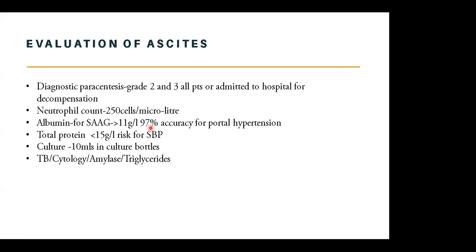We also send the fluid for total protein, keeping in mind that a total protein of less than 15 grams per liter is a risk factor for developing SBP. We have to send the fluid for culture, and we recommend at least 10 mls of the fluid in blood culture bottles — both two bottles. That means when doing an ascitic tap as a diagnostic paracentesis, we actually need a larger volume, perhaps 50 mls. Depending on the clinical presentation, we also send the fluid for TB, cytology, amylase, and triglycerides.